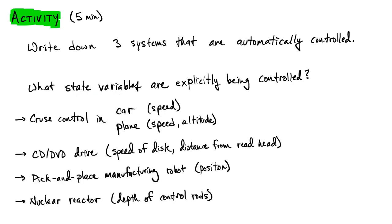There are many different choices that you could have made here to describe this. One of the ones that we'll talk about throughout this course is cruise control. In this case you can think about a car as trying to maintain its speed — the car is essentially increasing the acceleration, adding some acceleration.